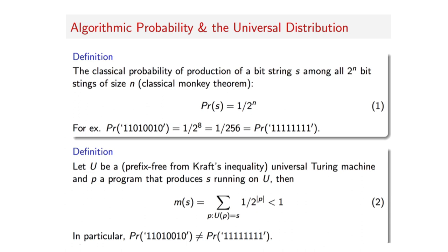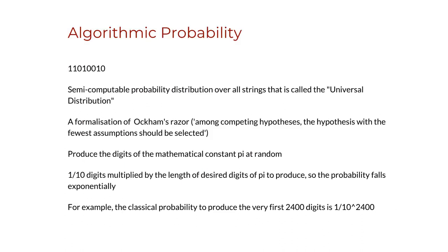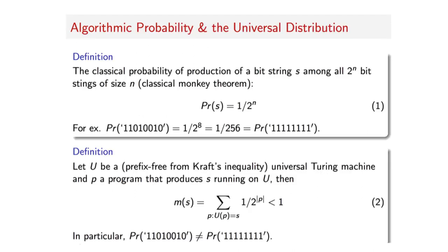So algorithmic probability allows us to introduce a natural bias related to the underlying generating mechanisms. In this case, the likelihood for a random computer program to produce a string.